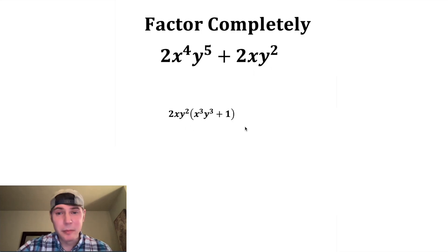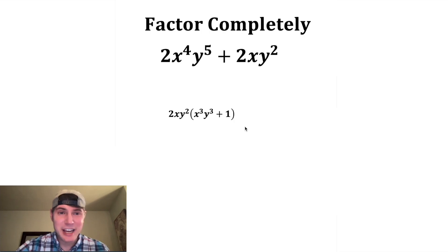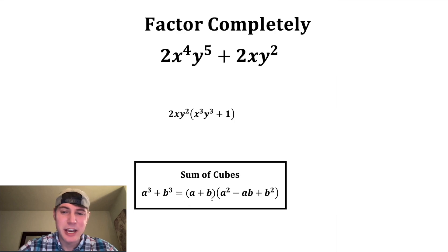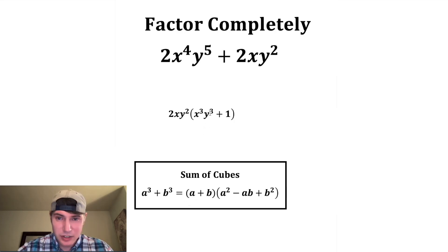A lot of people might think we're done right now, but we can go further. This right here is a sum of cubes. A cubed plus B cubed is equal to A plus B, times A squared minus AB plus B squared.